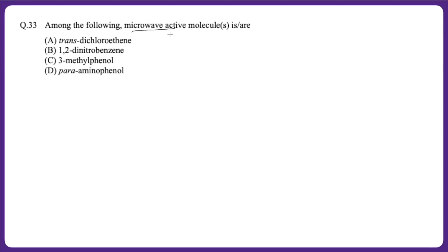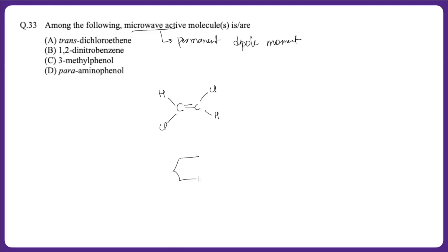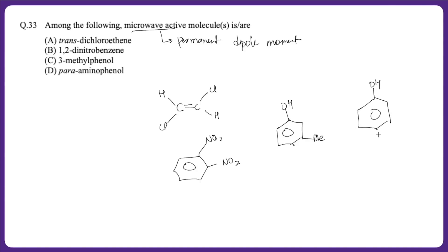The next question says: among the following, which molecules are microwave active? For a molecule to be microwave active, the selection rule requires a permanent dipole moment. Looking at option A — trans-dichloroethene — the dipole moments cancel out, so the molecule is non-polar. Option B is 1,2-dinitrobenzene, and option C is 3-methylphenol, and option D is para-aminophenol with OH and NH₂ groups.